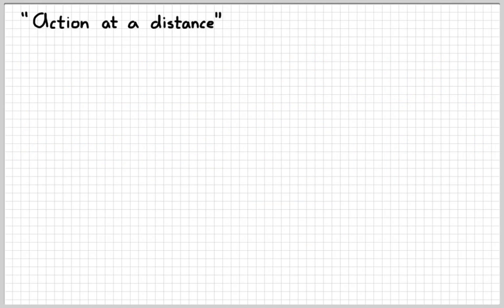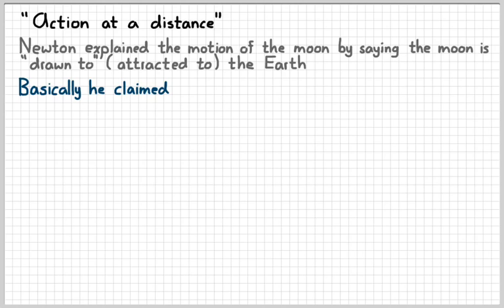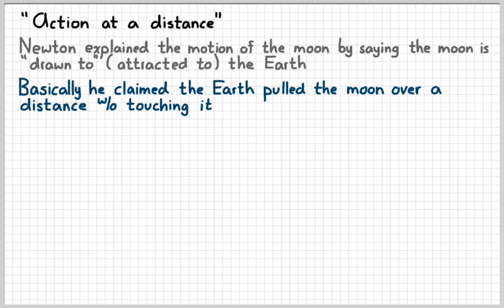So, the new and scary idea here is that things could happen across a distance. Newton explained the motion of the moon by saying that the moon is drawn towards, we would say attracted to, the earth. Basically, what he was saying is that the earth pulled the moon, or exerted a force on the moon, over a large distance without touching it. Which, at the time, was a pretty scary idea. People refer to it as spooky action at a distance.